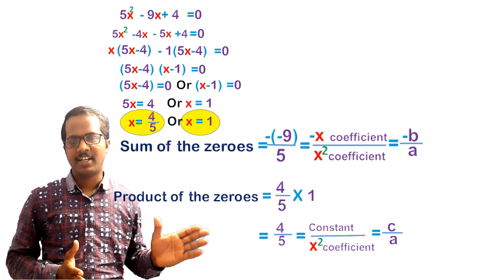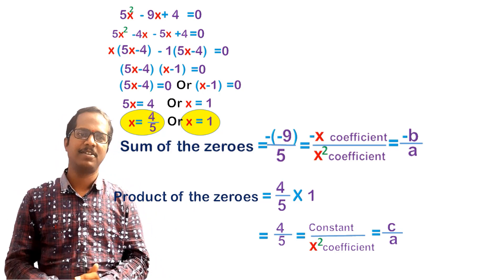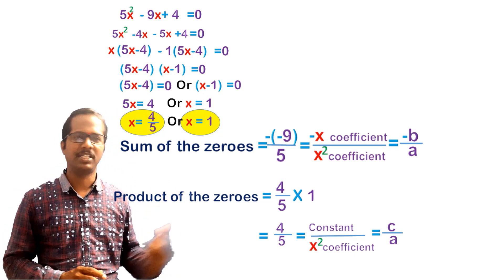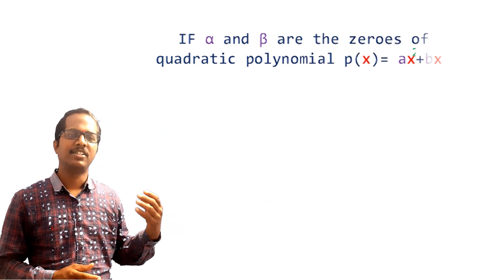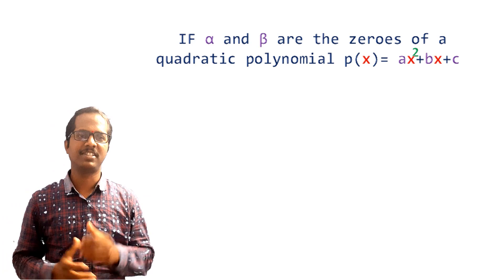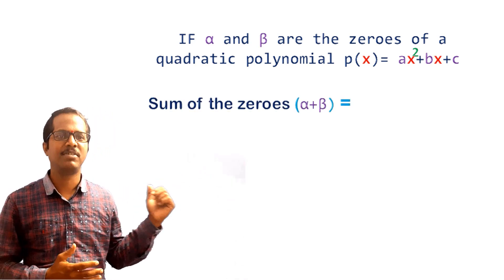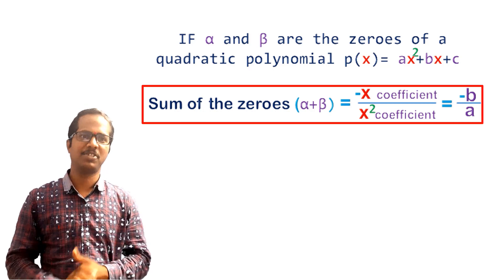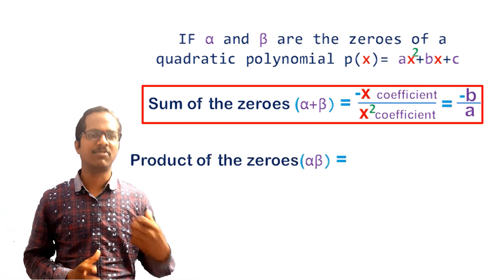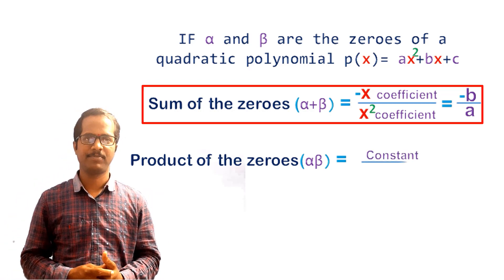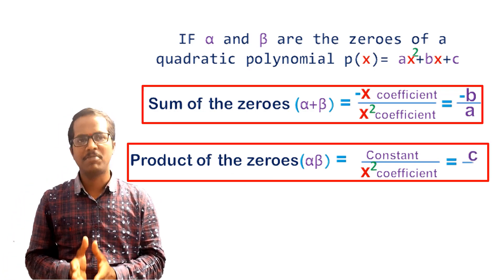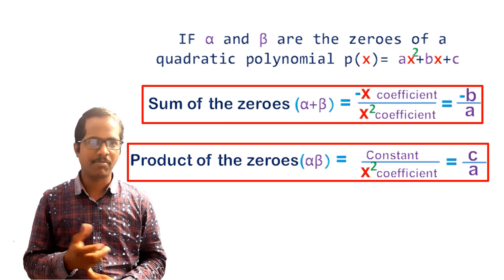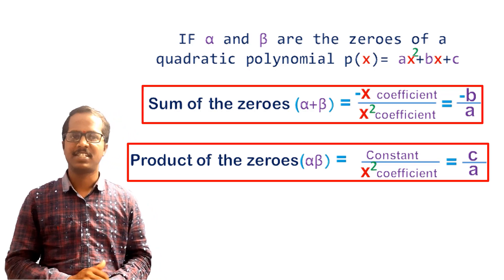These two results are always true for any quadratic polynomial. So we can conclude: if alpha and beta are the zeros of a quadratic polynomial ax² + bx + c, then the sum of the zeros, alpha + beta = -b/a, and the product of the zeros, alpha × beta = c/a. These are the two important results we need to remember, so that we can find the sum and product of zeros without actually finding the zeros.